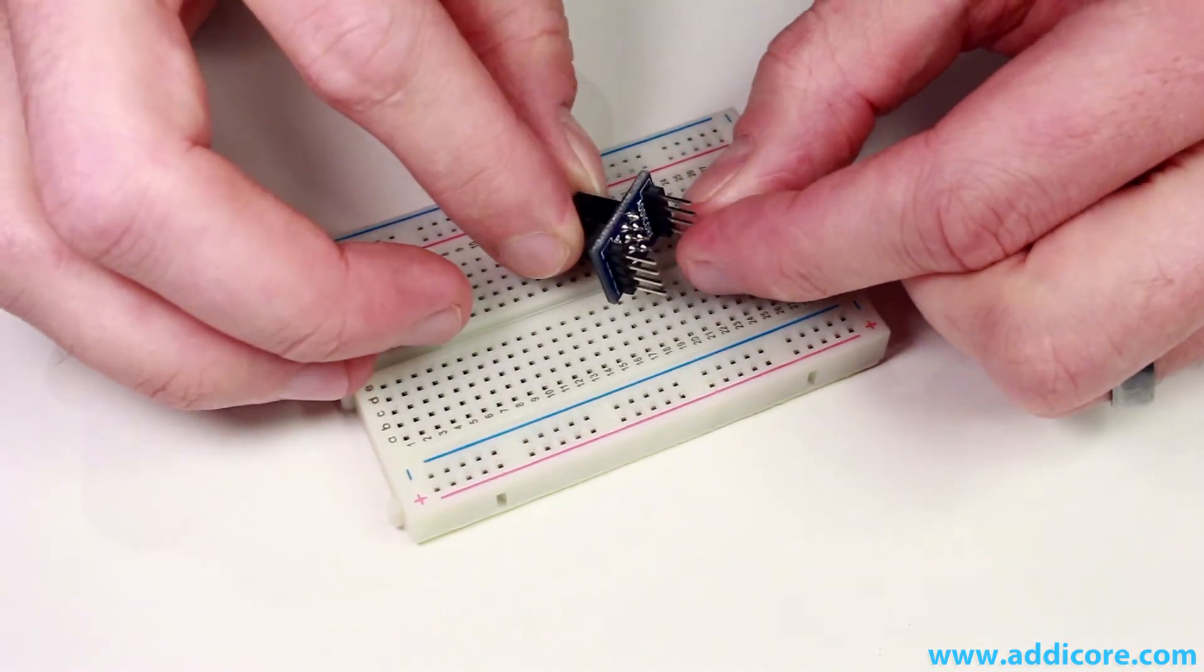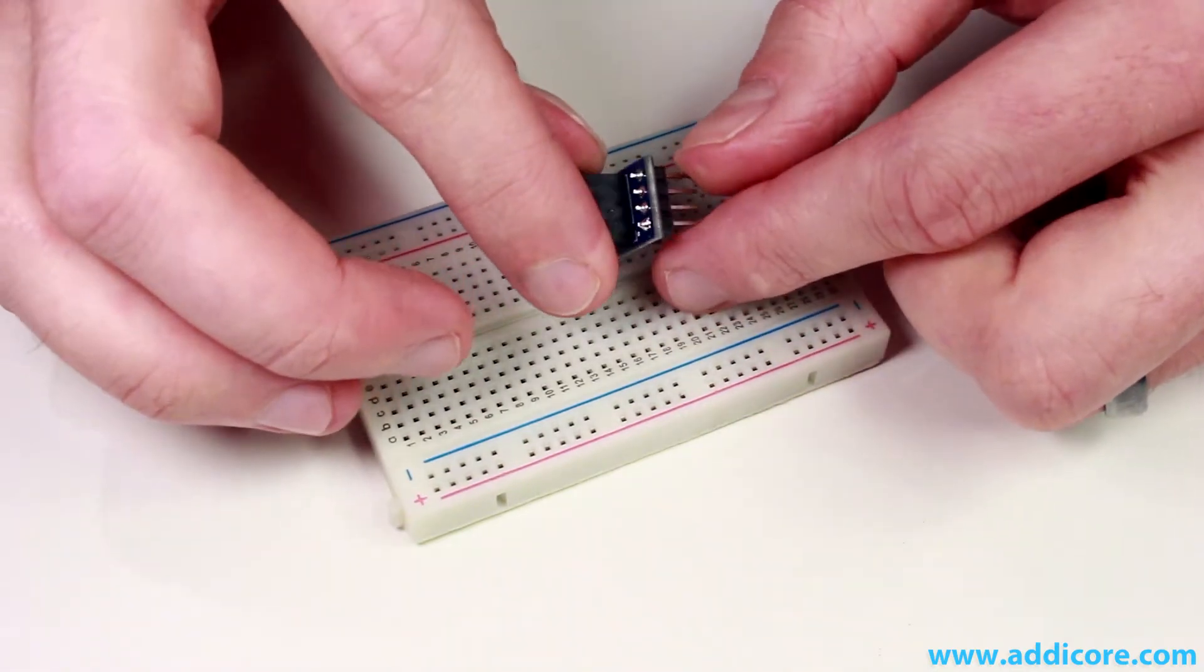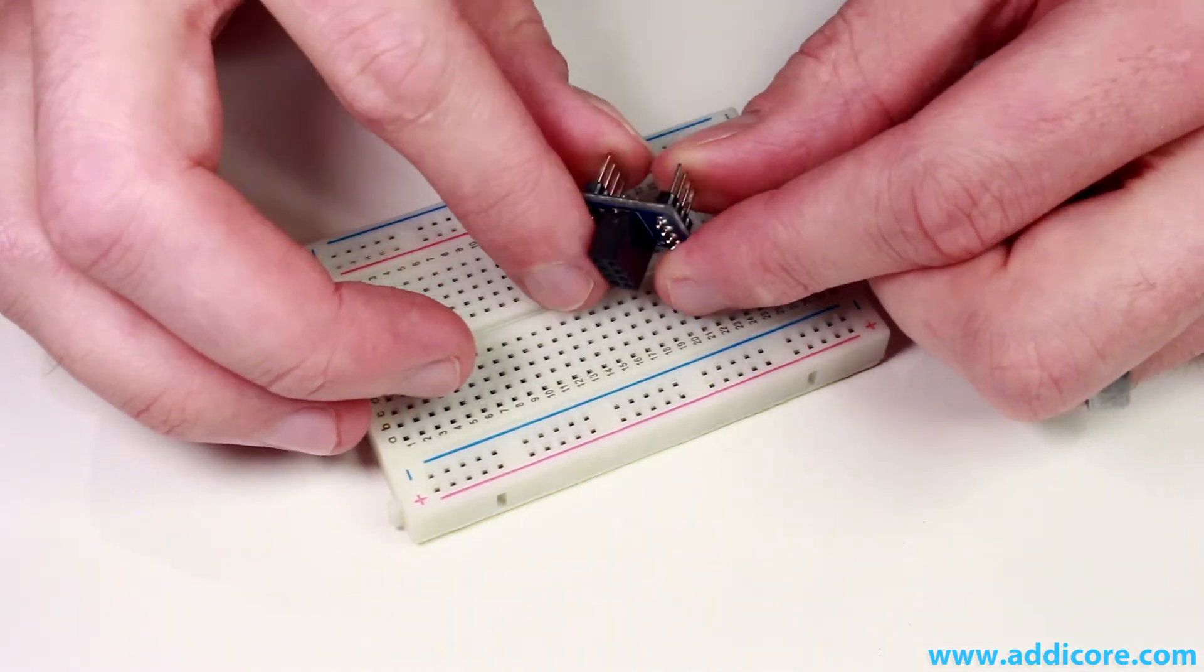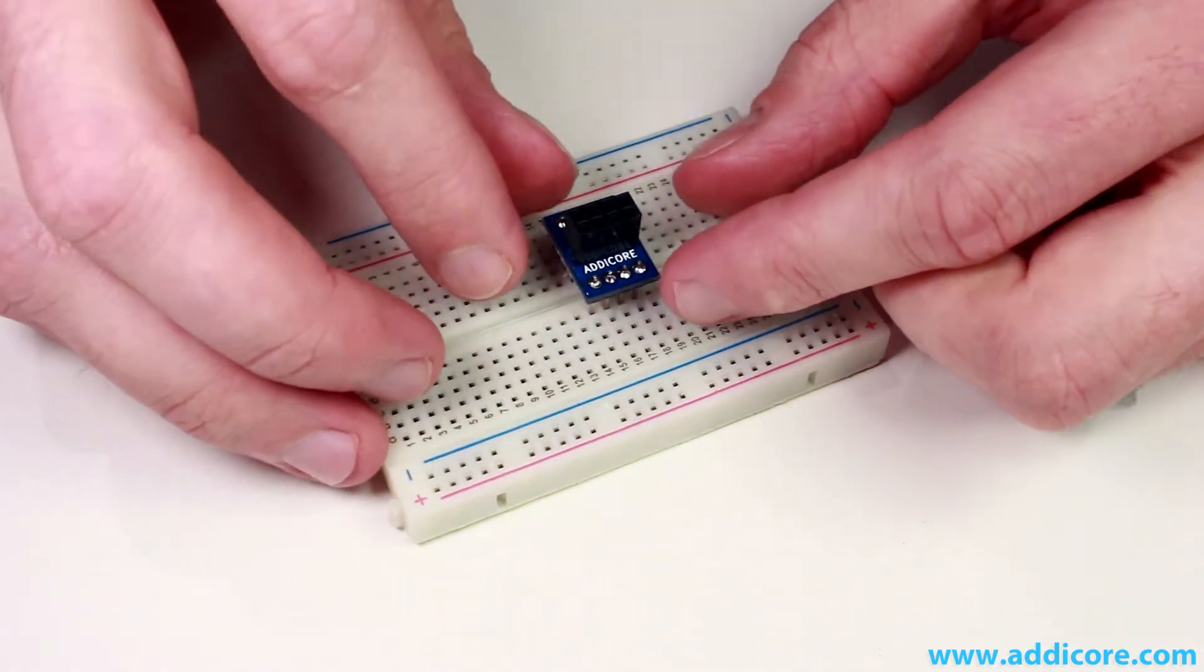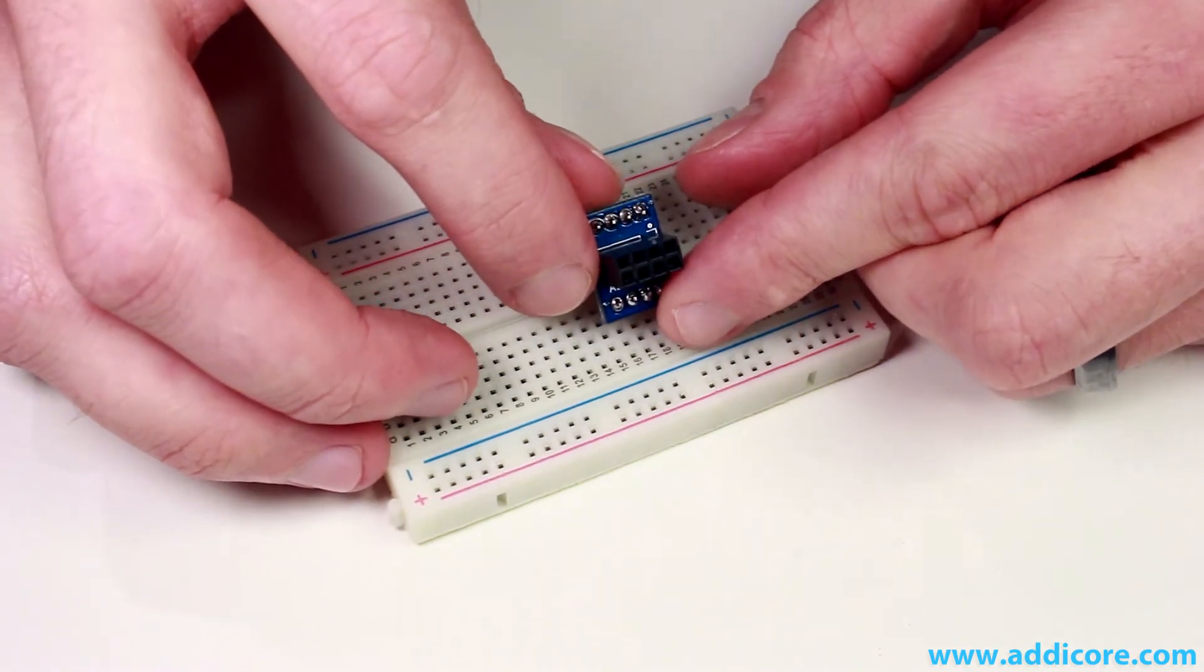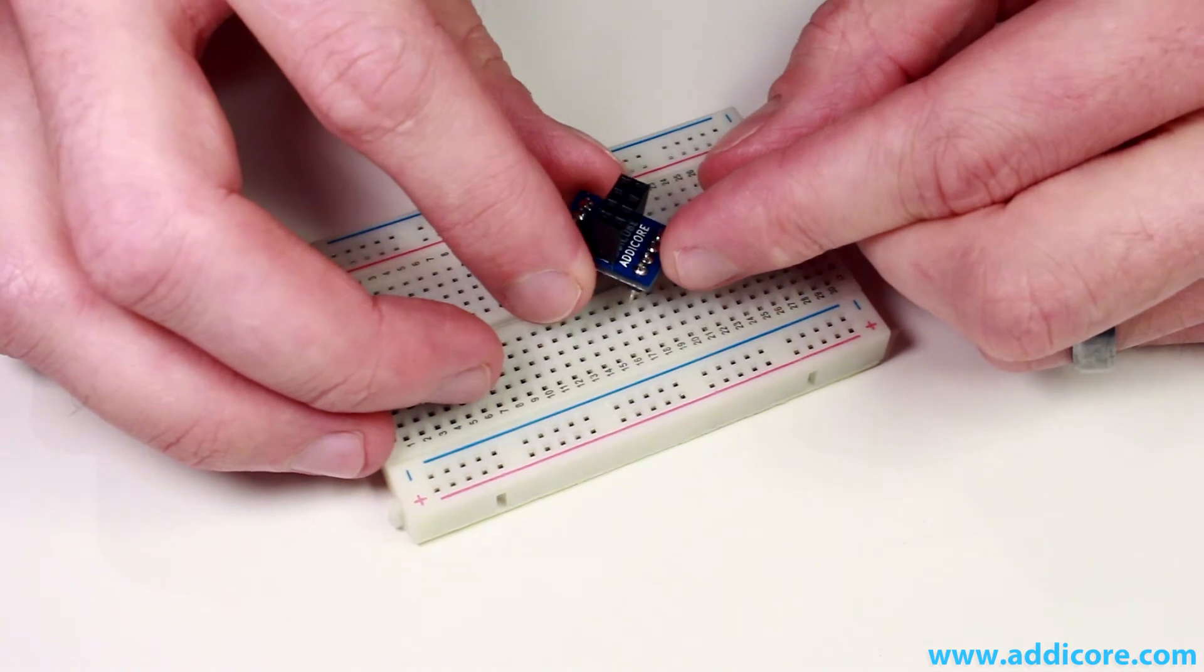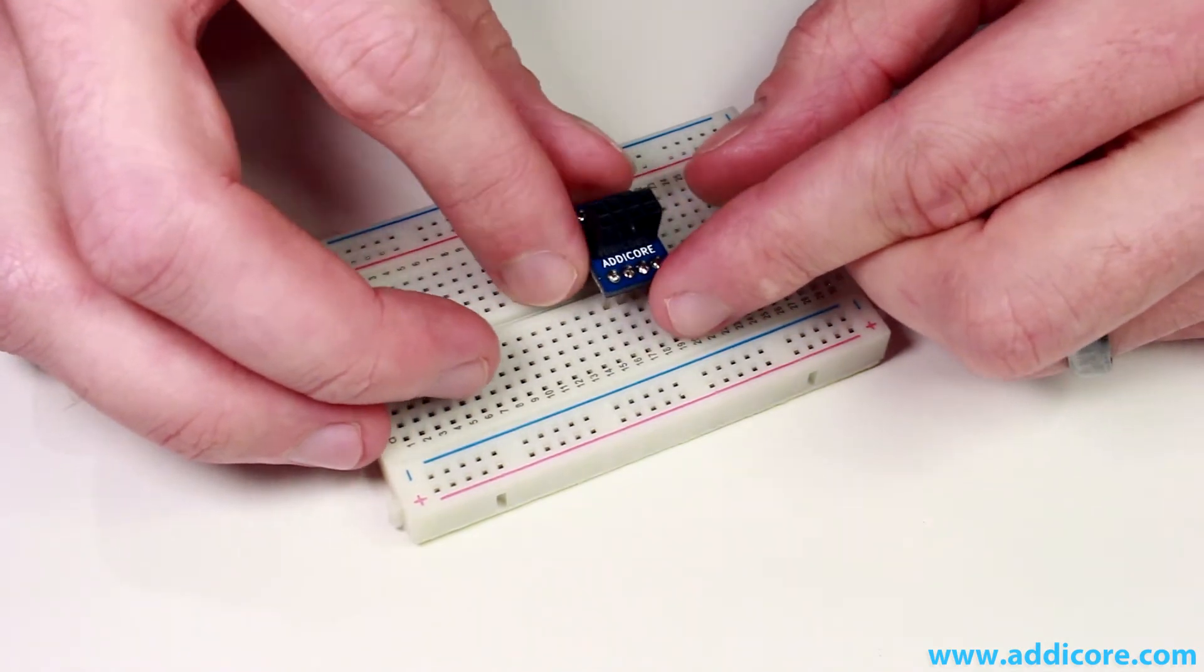We now have assembled our adapter. The Addicore BB-ADTR adapter that we've assembled here, you can find at Addicore.com. We hope that you enjoyed and that it works well for any 2x4 header module or device that you're using.